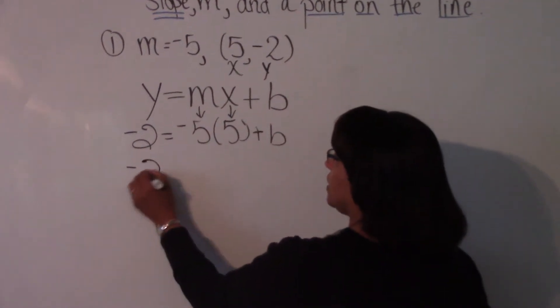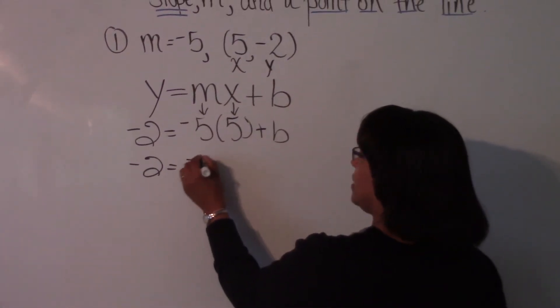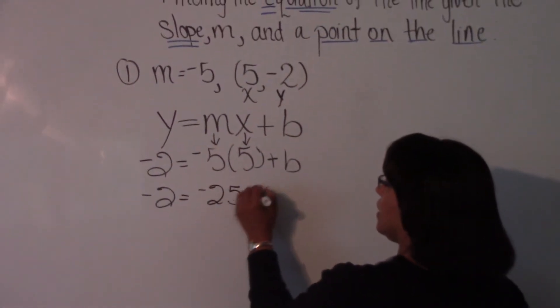Now we're going to bring down negative 2. Negative 5 times 5, because they're right next to each other, is negative 25. And we add b.